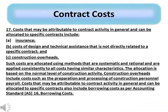Para 17: Costs that may be attributable to contract activity in general and can be allocated to specific contracts include: A) insurance; B) costs of design and technical assistance that is not directly related to a specific contract; and C) construction overheads. Such costs are allocated using methods that are systematic and rational and are applied consistently to all costs having similar characteristics. The allocation is based on the normal level of construction activity. Construction overheads include costs such as the preparation and processing of construction personnel payroll. Costs attributable to contract activity in general also include borrowing costs as per Accounting Standard AS-16, Borrowing Costs.